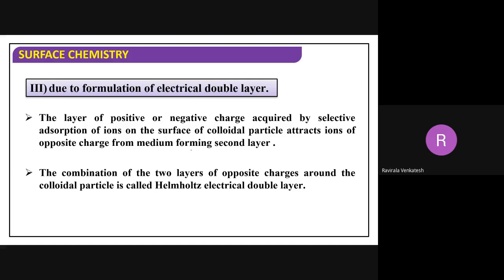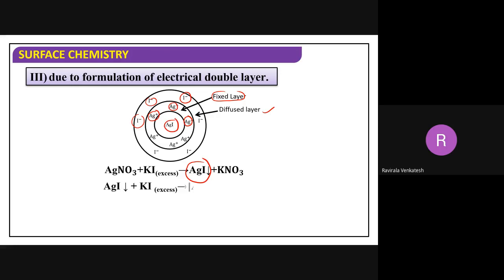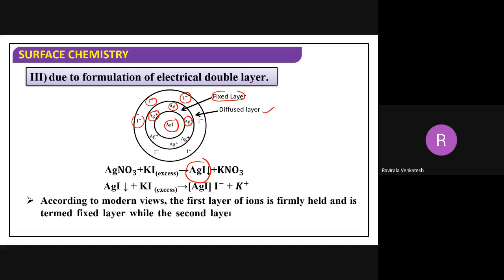Both a fixed layer and a mobile layer are formed. For example, with silver iodide precipitation: when excess potassium iodide is added, I⁻ ions are adsorbed on the silver iodide surface. According to modern views, the first layer of ions is firmly held — called the fixed layer. The second layer is loosely held — called the diffused or mobile layer.